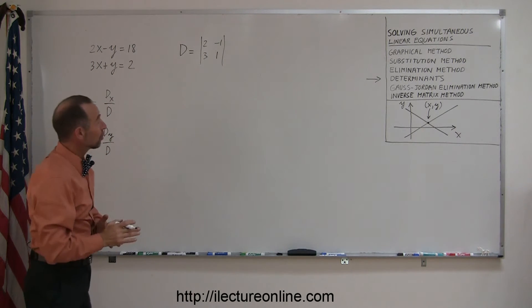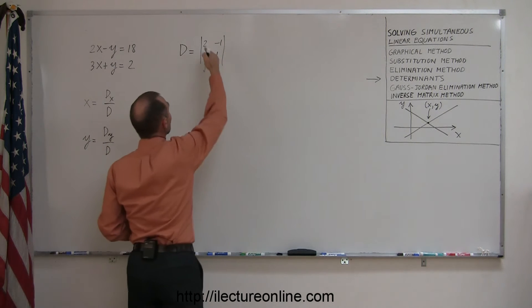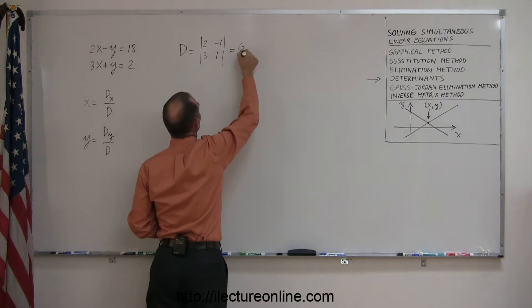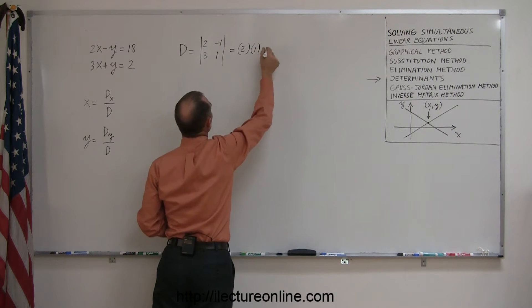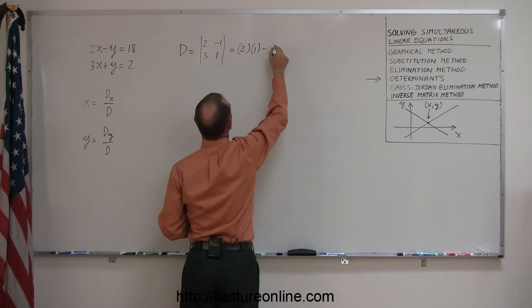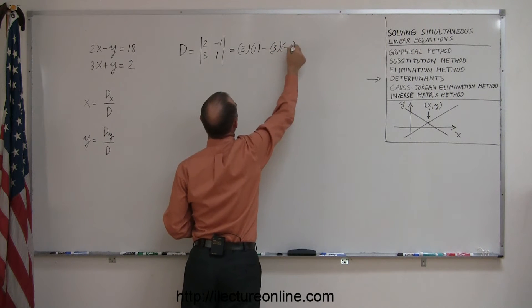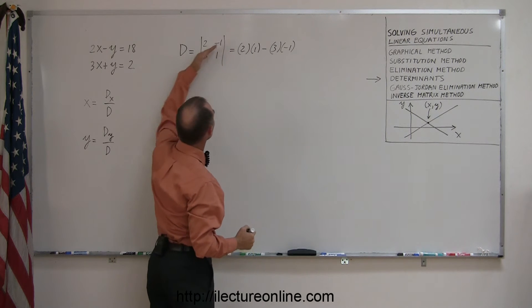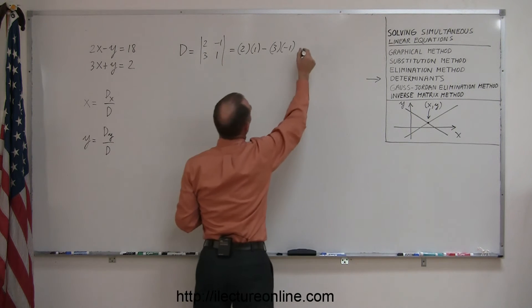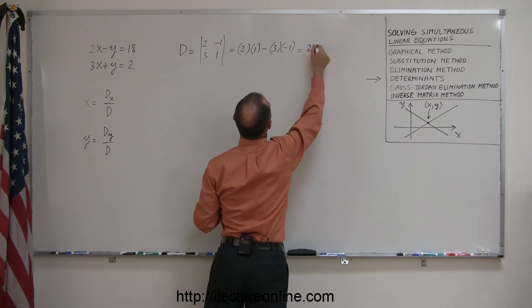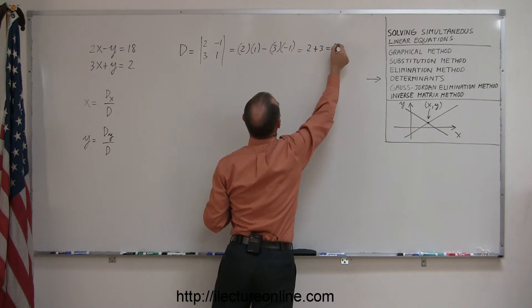And then the way you solve the determinant is by taking the numbers in the diagonal this way, multiply them together, and subtracting from that the product of the other two numbers in this diagonal, which would be a 3 times a negative 1. So simply multiply these two together and then subtract when you multiply these two together. And so this becomes 2, a minus times a minus 3, which is plus 3, which is a 5.